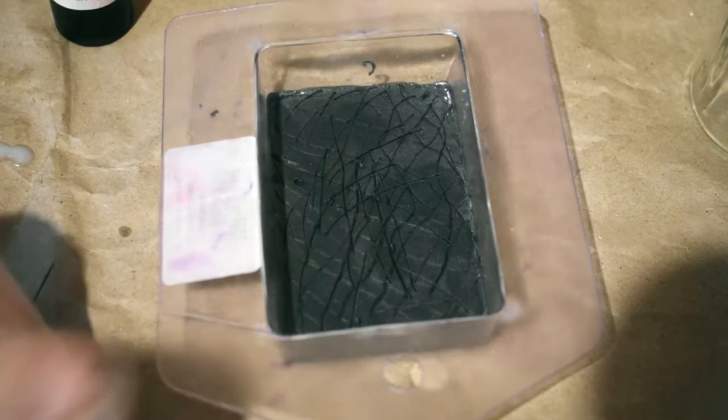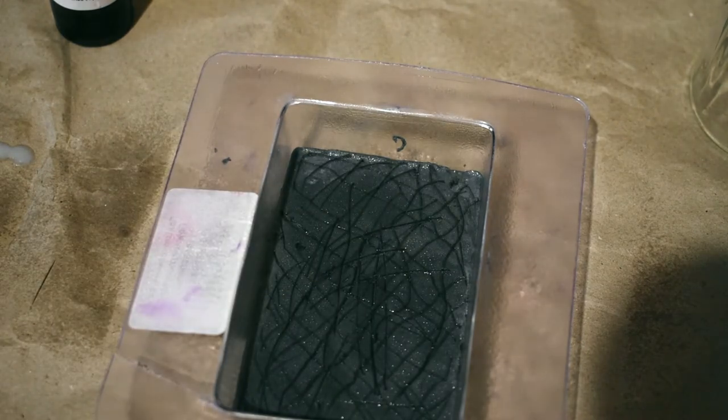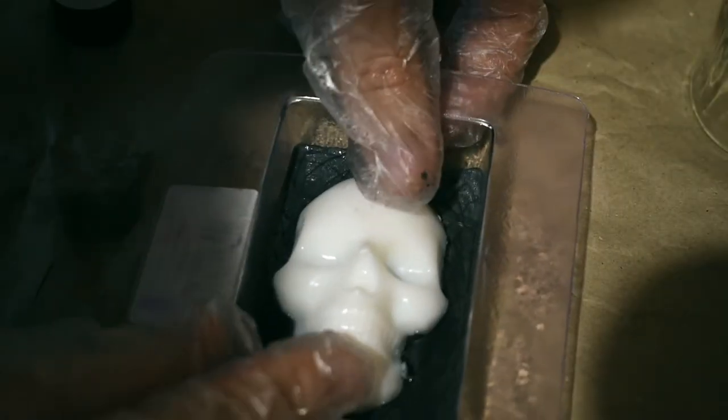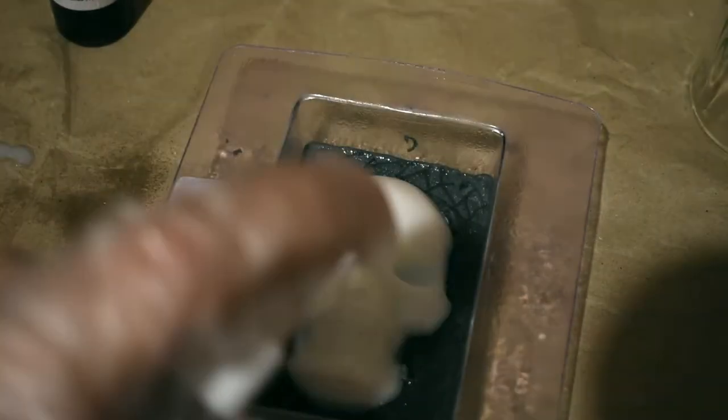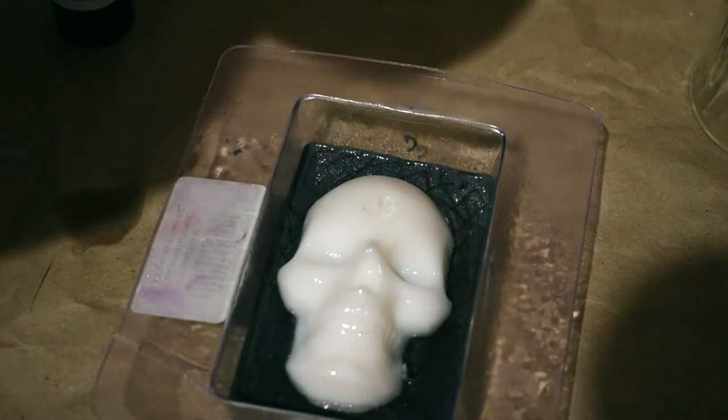I spray the background and pour some soap to glue the background and the skull. Then I spray it again and fill the rest. Pour slowly to avoid bubbles. After that, I spray it with alcohol again.